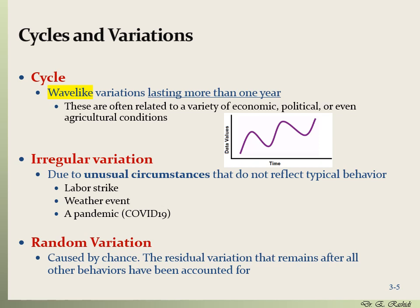The other type of variation in time series is called random variation. Random variation is caused by chance and is inherent in any system that we cannot really control. Random variation is the residual remaining variation after all other variation types have been accounted for — after you have counted for cycles, trends, seasonality, and irregular variation, whatever variation remains is called random variation.